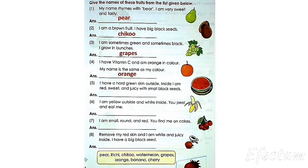Number 5: I have a hard green skin outside. Inside I am red, sweet and juicy with small black seeds. The name of this fruit is watermelon.